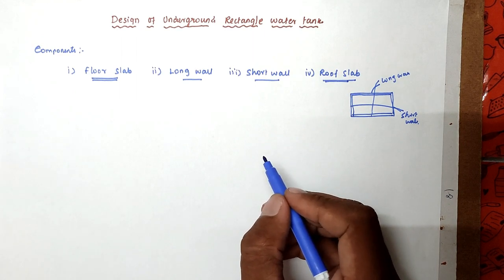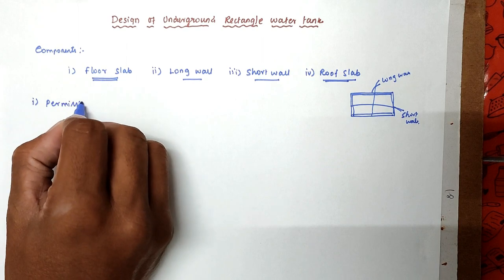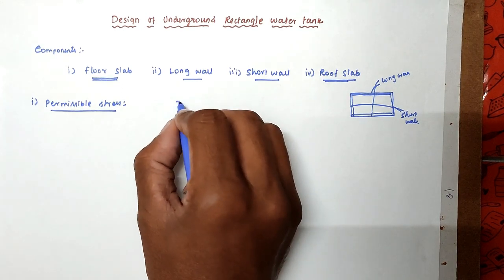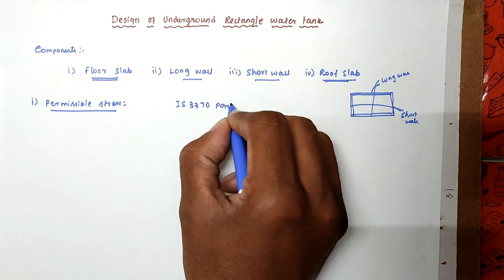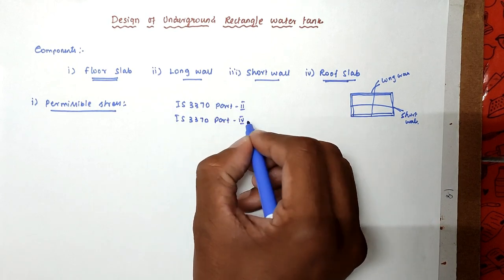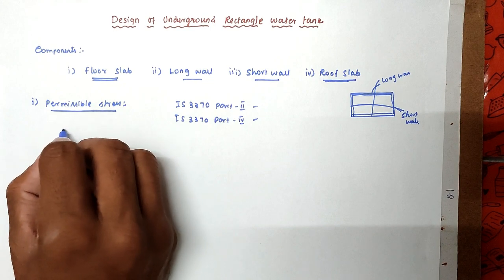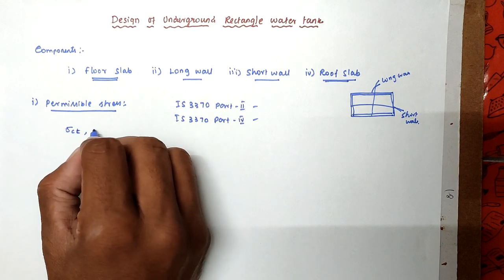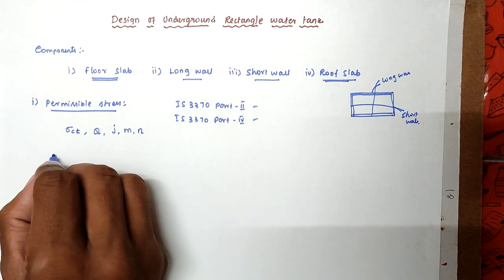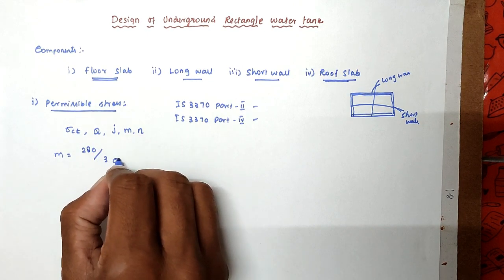For these components, we have to know the design procedures step by step. The first thing is we have to know the permissible stress. This is the foremost thing. For that, we have to refer to IS 3370 Part 2 and IS 3370 Part 4. These two IS codes are required to design the underground rectangular water tank. For permissible stress, we have to know the sigma CT value, Q, the load, J, M, and N. M is equal to 280 divided by 3 into sigma CBC value.